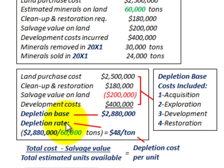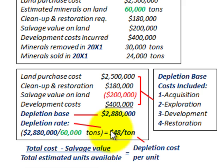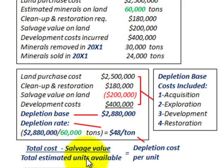To determine our depletion rate, we take our depletion base of $2,880,000 and divide it by the total estimated minerals of 60,000 tons — that's the total amount estimated. The division gives us a depletion rate of $48 per ton. We've taken our total cost, subtracted salvage value, and divided by the total estimated units available — 60,000 tons — giving us a depletion cost of $48 per ton.